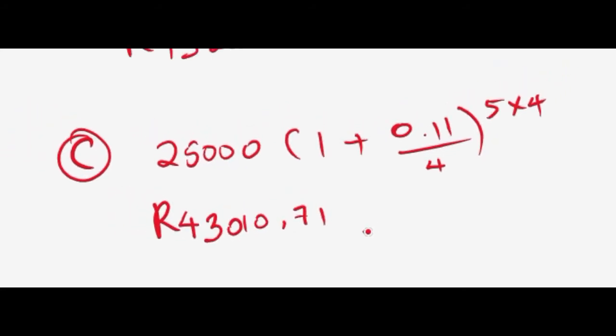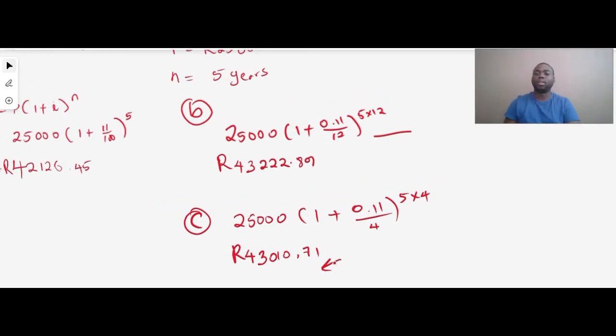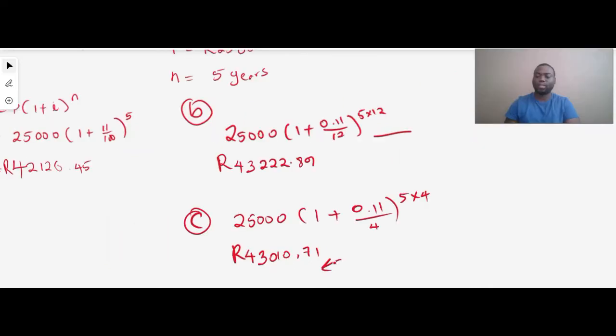For compounding quarterly, we divided by four because it is quarterly, and we also multiplied our n by four. That gives us the answer for compounding quarterly.